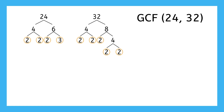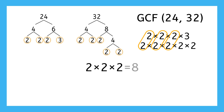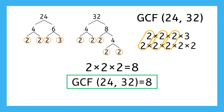Based on these factor trees, the prime factorization of 24 is 2 times 2 times 2 times 3. And the prime factorization of 32 is 2 times 2 times 2 times 2 times 2. If we compare each of these, we find that they have 2 times 2 times 2 in common. 2 times 2 is 4, and 4 times 2 equals 8. The greatest common factor of 24 and 32 is 8.